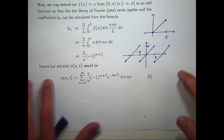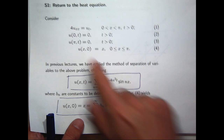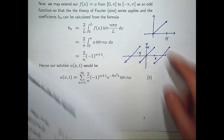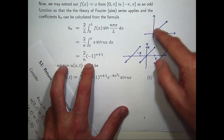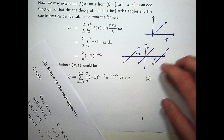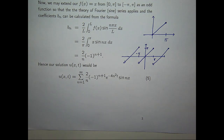So if you had derivatives in the boundary conditions and cosines in the solution, what you would do is extend the initial temperature function as an even function and then form the Fourier cosine series.